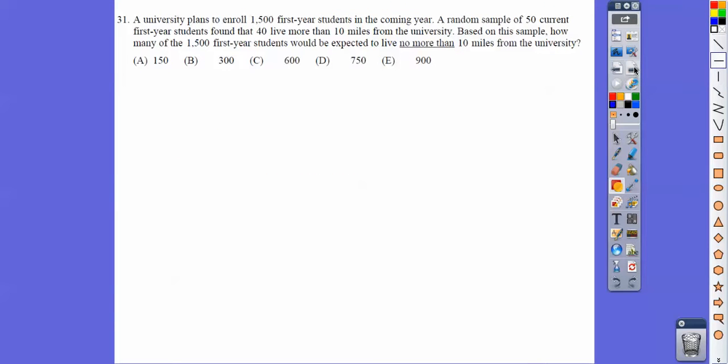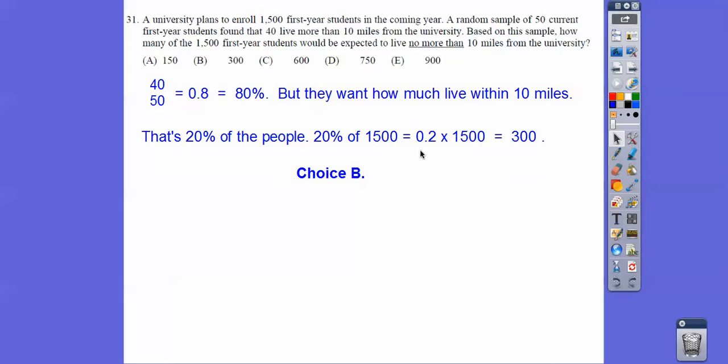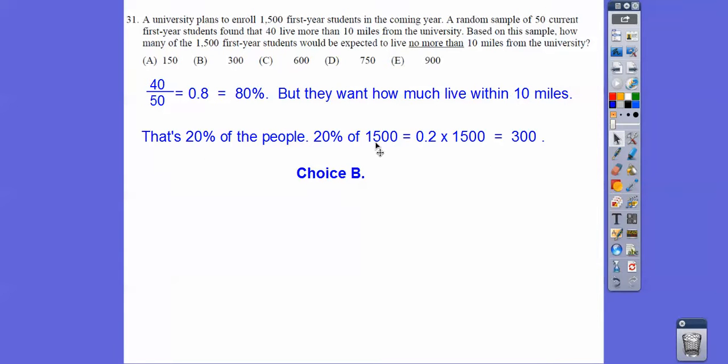A university plans to enroll 1,500 first-year students in the coming year. A random sample of 50 current first-year students found that 40 live more than 10 miles from the university. So 40 over 50 is 80% or 0.8. So we've got to find who live more than 10 miles, that's 80%. So 20% live less than 10 miles, so 20% of the 1,500 is 300, choice B.